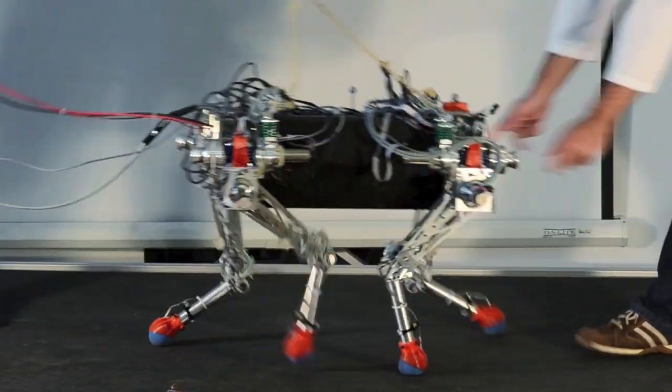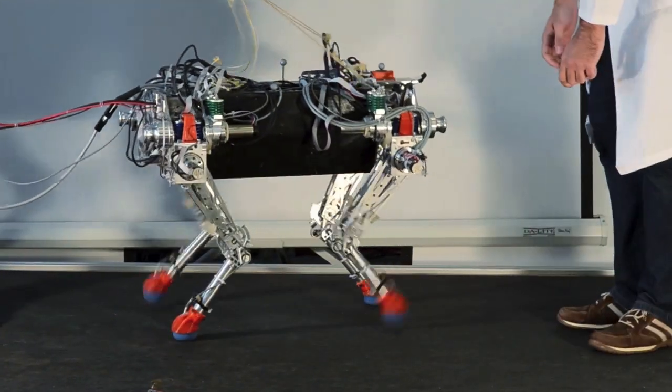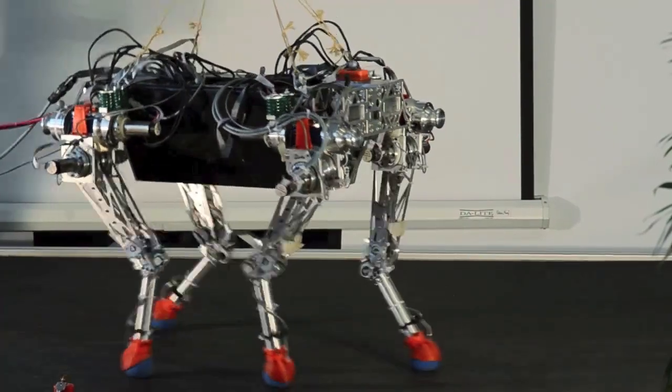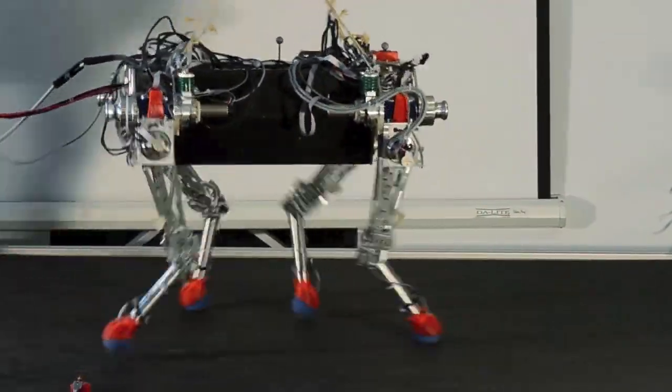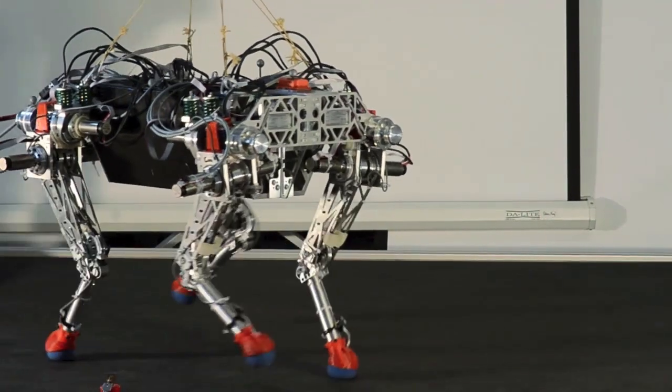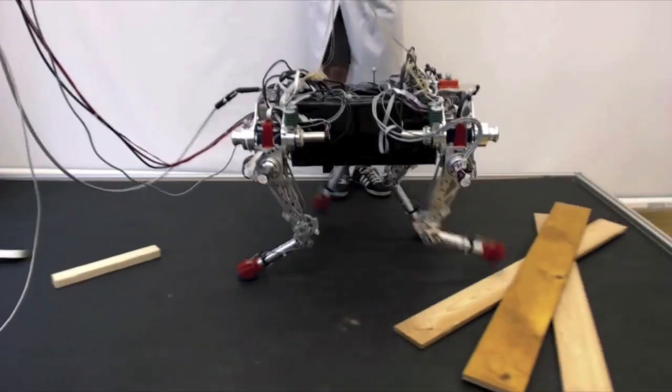Furthermore, we can start to become more dynamic and fast in our maneuvers. As an example, Starlet can perform a trotting gait. He can do so even if there are obstacles in its way.